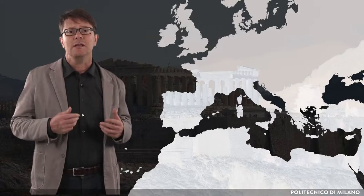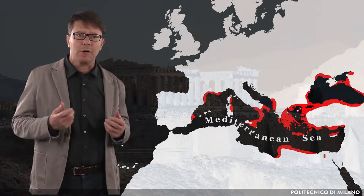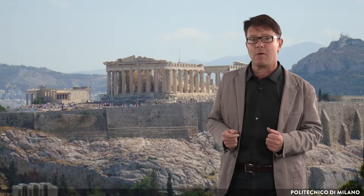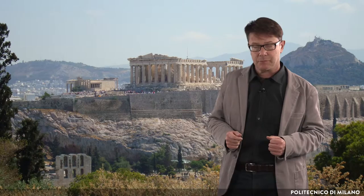The classical world, or classical antiquity, is a traditional definition describing the cultures of the Mediterranean area, from classical Greece to the end of the Roman Empire. In this lesson we shall speak about Greek sacred architecture, which is famous for hundreds of magnificent temples built over the course of several centuries.